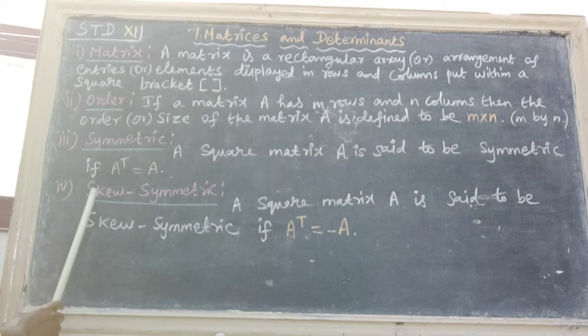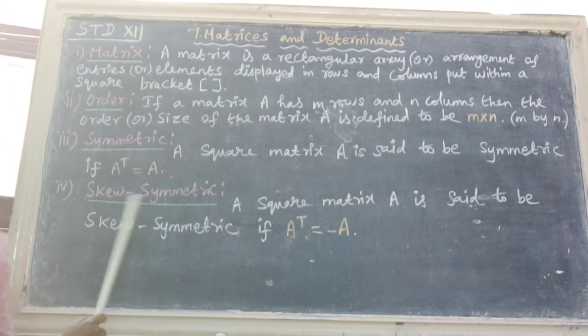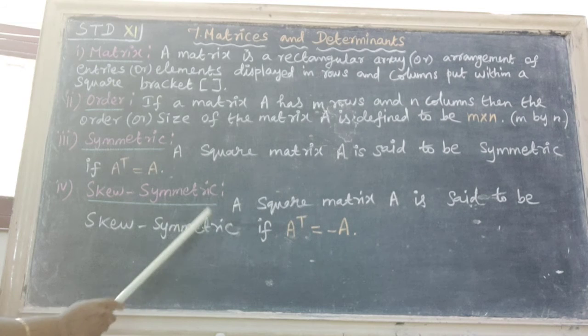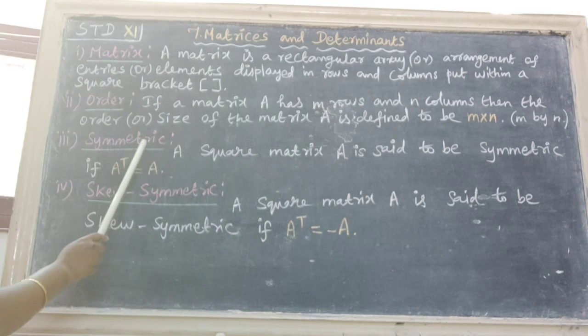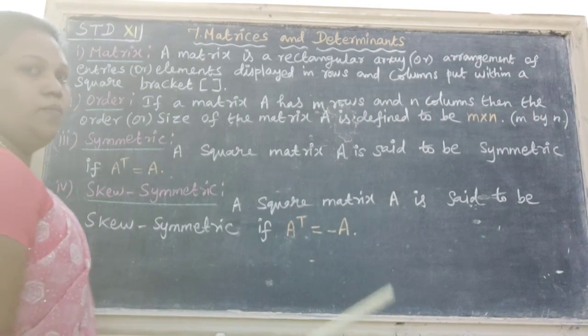Next one is skew symmetric. A square matrix capital A is said to be skew symmetric if A transpose equal to minus A. That is the difference between symmetric and skew symmetric, here plus A, here minus A.